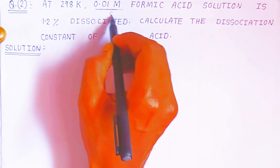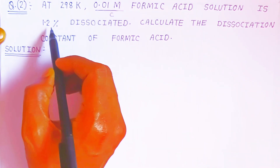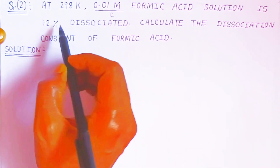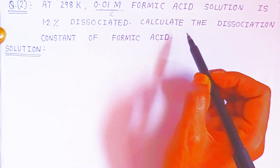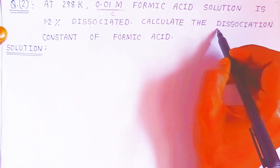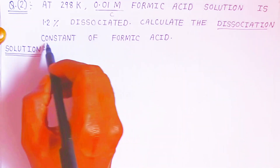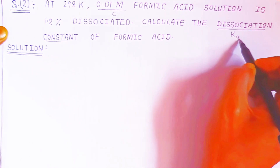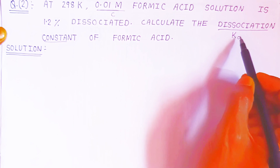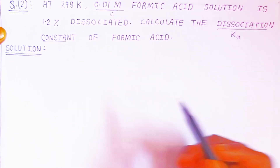The solution is 1.2 percent dissociated — the percent dissociation is given. We have to calculate the dissociation constant. Since it is an acid, we calculate Ka. We are showing the dissociation constant with Ka. If it were a base, we would show it with Kb.